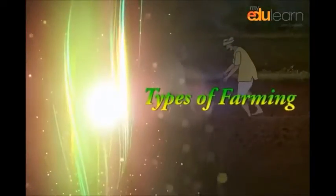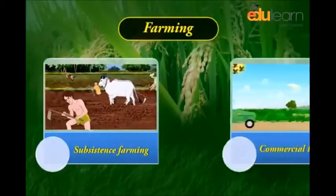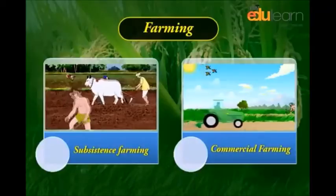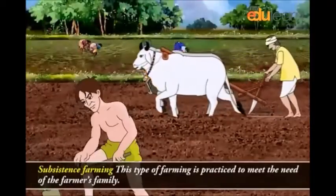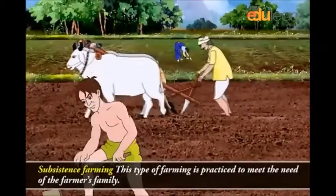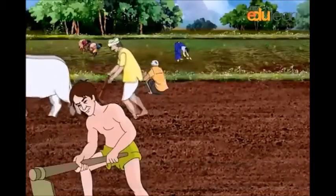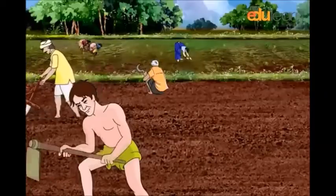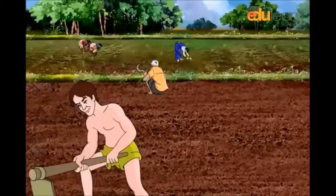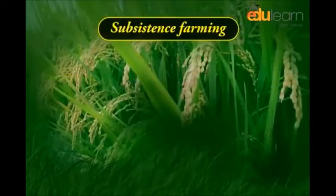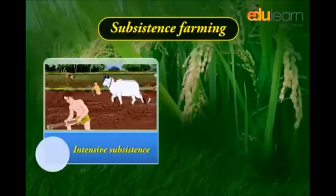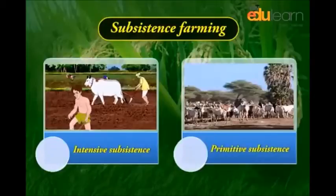Types of Farming: Farming can be classified into two main types — subsistence farming and commercial farming. Subsistence farming is practiced to meet the needs of the farmer's family. Traditionally, low levels of technology and household labor are used to produce a small output. Subsistence farming can be further classified as intensive subsistence and primitive subsistence farming.